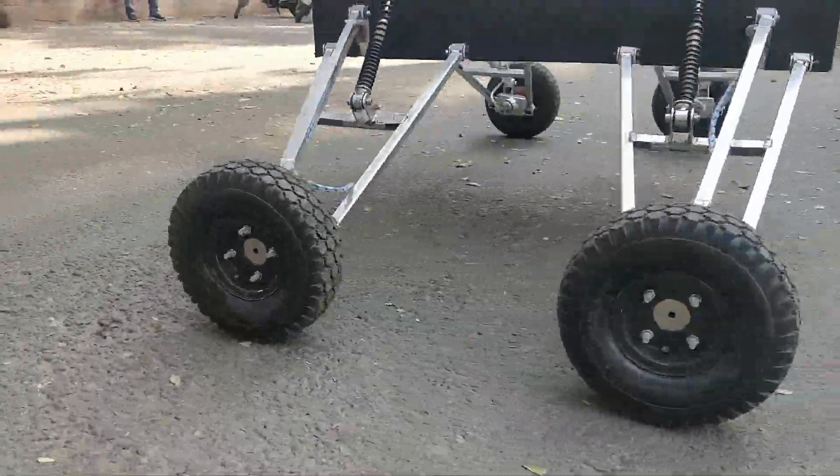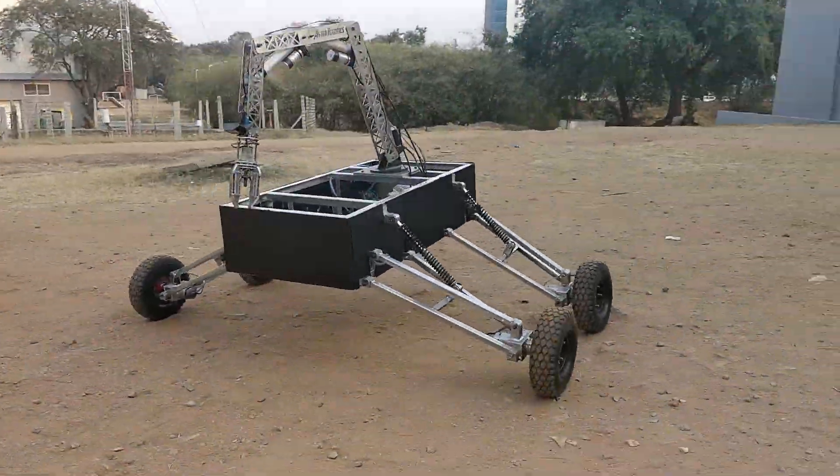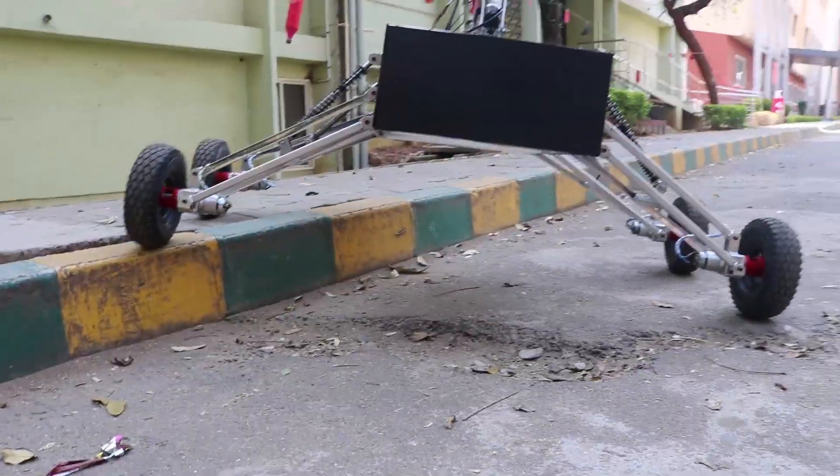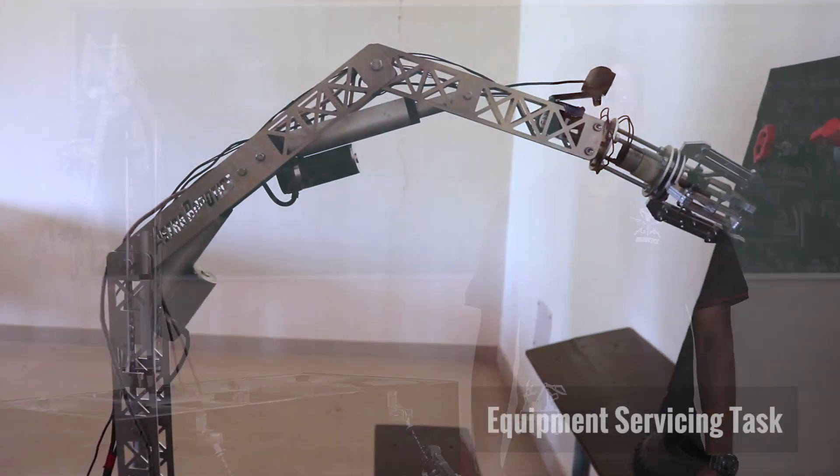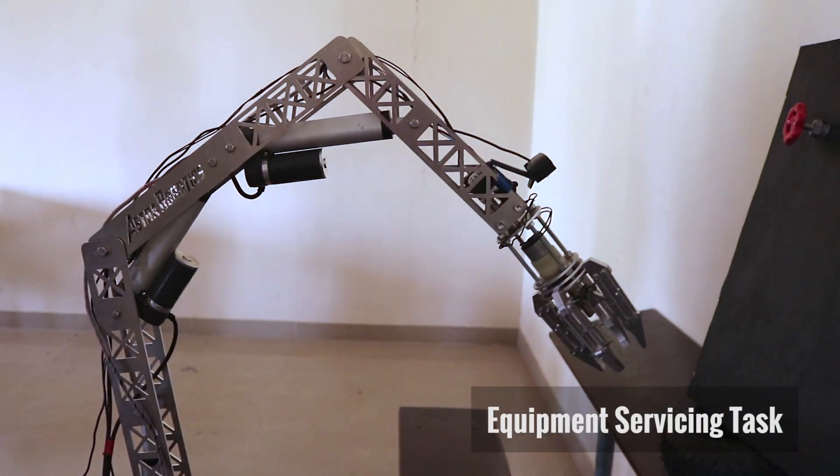Since the center of gravity of the vehicle is closer to the front wheels, a stiffer spring is used in front as compared to the rear. A compact and light 5 degree of freedom robotic arm has been employed to meet the requirements of the competition.